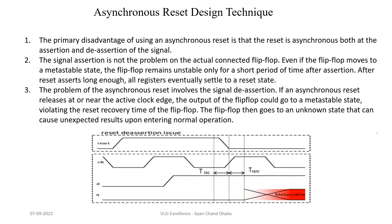In the previous video, we concluded what is the problem with asynchronous reset assertion and deassertion. We saw that there is no problem during asynchronous reset assertion because even if the reset assertion happens near the active clock edge and the flip-flop moves to a meta-stable state, the flip-flop remains in meta-stable state only for a short period of time, because the reset is applied for quite a long time and eventually the flip-flop will get into the reset state. So during reset assertion there is no problem, but asynchronous reset deassertion has a problem.